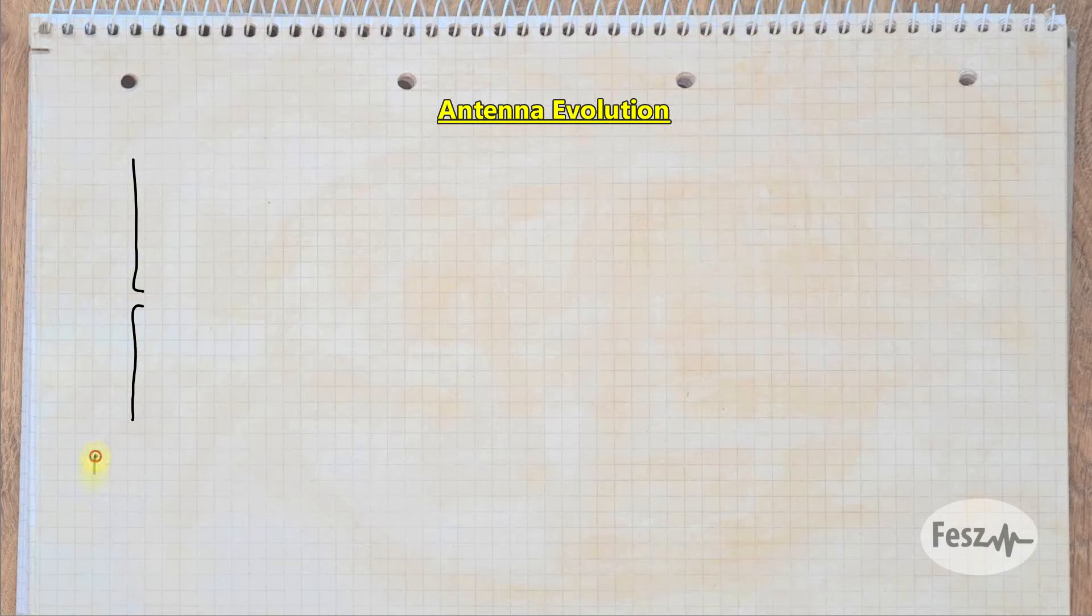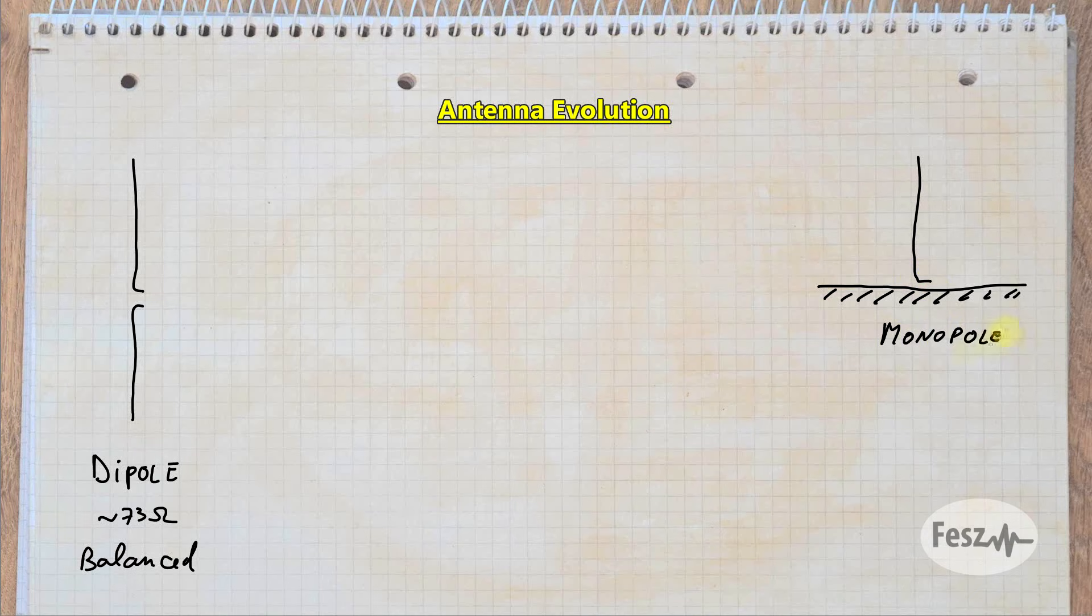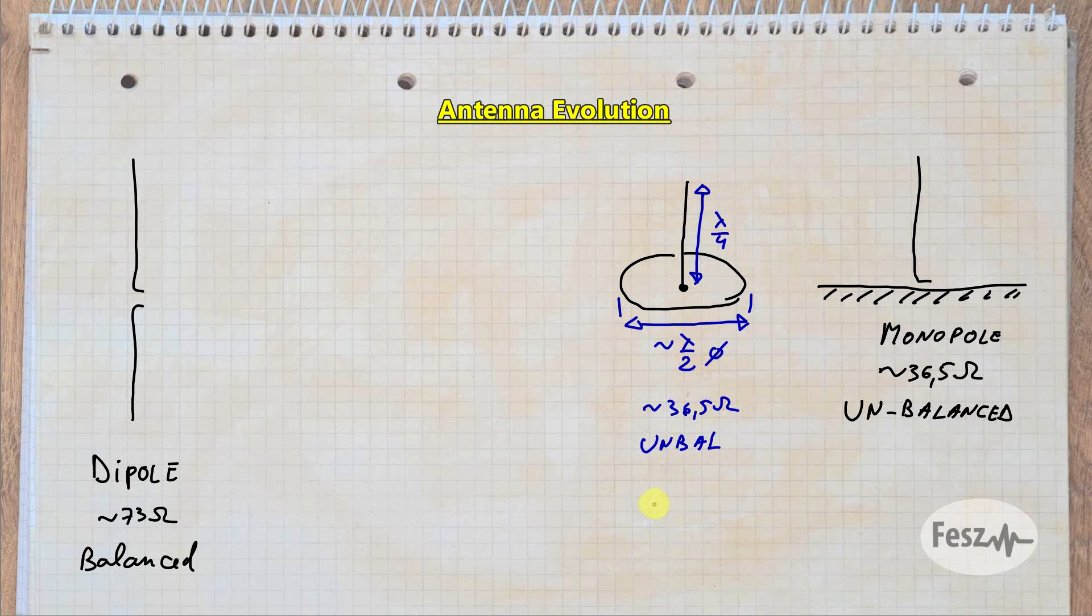To understand the ground plane antenna's properties, we need to see its relationship to the two fundamental structures between which it stands: the balanced dipole and the unbalanced monopole. So in theory at least, the monopole needs an infinite ground around it, but in practice this can be reduced. You can get similar results with even a half wavelength diameter disc.